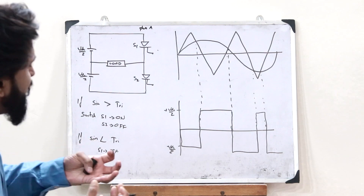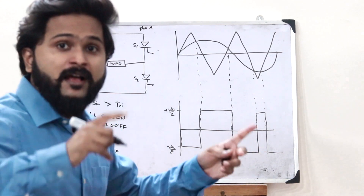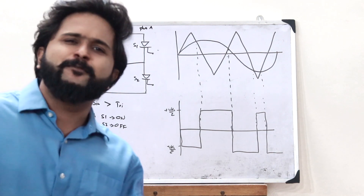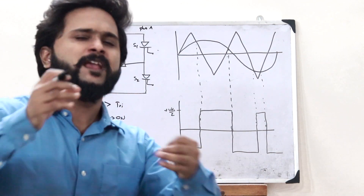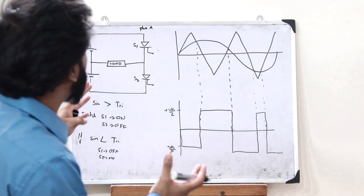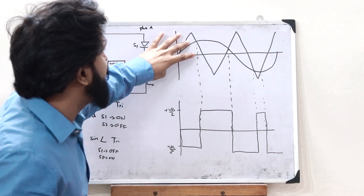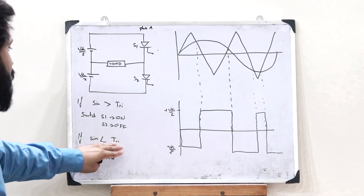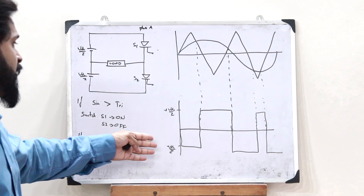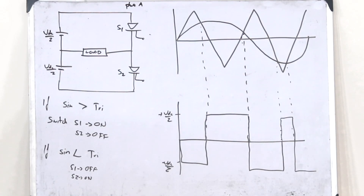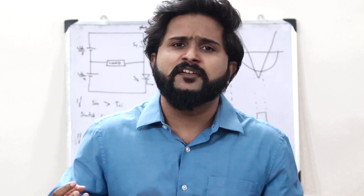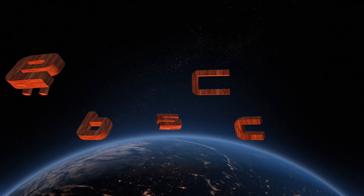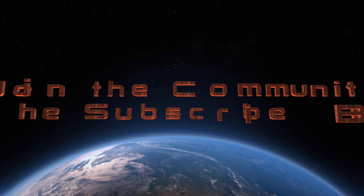This is the basic mechanism through which we can obtain a pulse width modulated signal from a single phase. If the same concept is applied to all three phases, we can simply obtain a PWM signal from a three-phase inverter. All we do is compare a sine wave with a triangular wave: if sine wave is greater than triangular wave, S1 is on giving plus VDC/2; if sine wave is less, S2 is on giving minus VDC/2. I hope you now have a clear understanding, and we'll discuss further topics in upcoming videos.